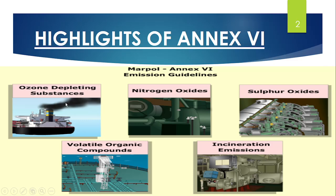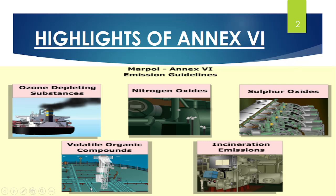The ozone is present in the stratosphere, which helps reflect back UV rays. The ozone is depleted by certain gases, which allow UV rays to come directly onto the earth, causing skin cancer and skin-related diseases. Therefore MARPOL Annex 6 prevents the use of such gases. Nitrogen oxide (NOx) and SOx cause respiratory problems, acid rain, and affect the agricultural environment, so they are regulated under Annex 6.